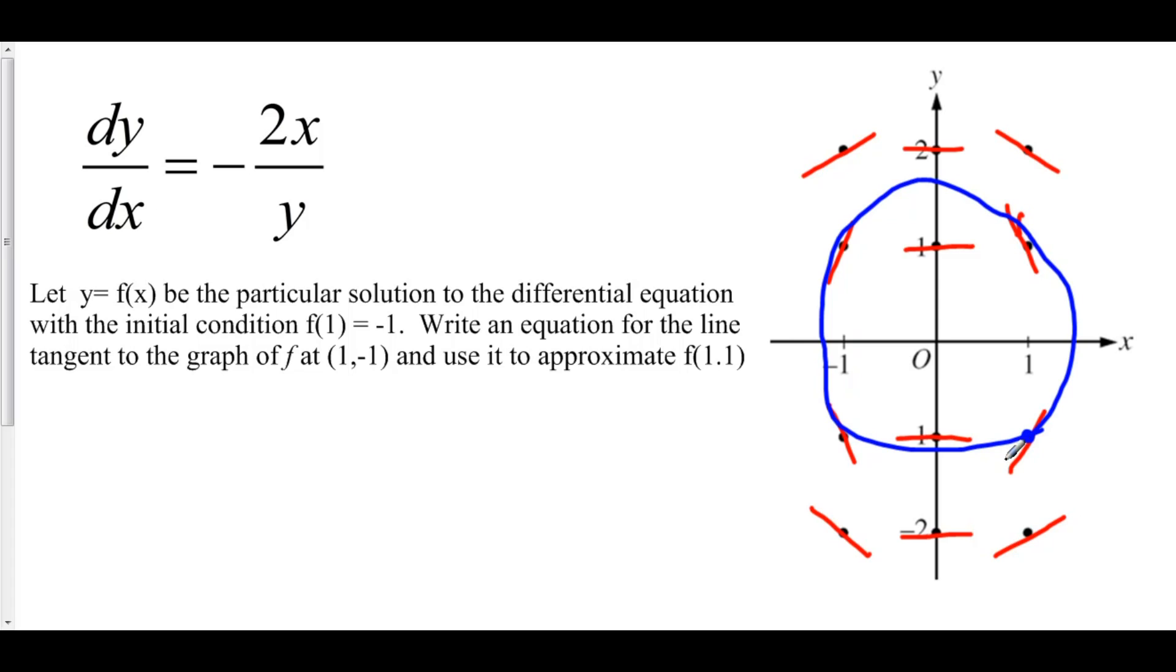Moreover, the cool thing about a slope field is that we actually have the slope of our tangent line given to us by our slope field. Our tangent line at this particular point was positive 2, and you can easily verify that by plugging (1, -1) into dy/dx. We have negative 2 times 1 is 2 over negative 1 gives us negative negative 2, which is positive 2. This is dy/dx at the point (1, -1), and we know that dy/dx is the slope of the tangent line of y at that particular point. We know that our particular solution has the slope tangent line 2 at this point as shown.